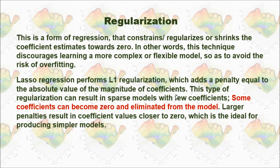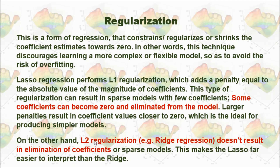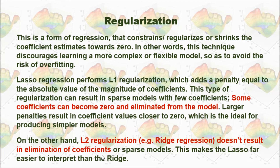Lasso Regression applies a penalty equal to the absolute value of the magnitude of coefficients, so it performs L1 regularization. In my previous video, I mentioned Ridge Regression performs L2 regularization, because Ridge adds a penalty equal to the square of the magnitude of coefficients. The key difference is that Ridge Regression never eliminates coefficients entirely, but in Lasso Regression some coefficients can become exactly zero and be eliminated from the model.